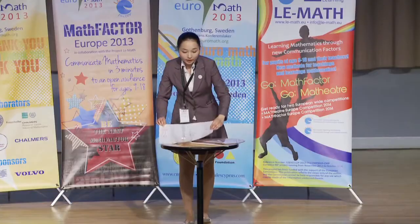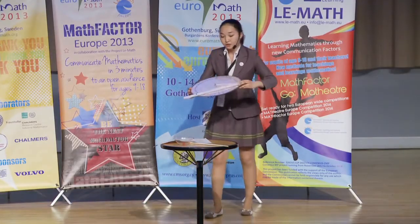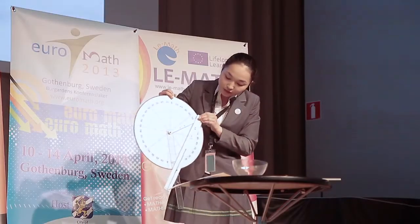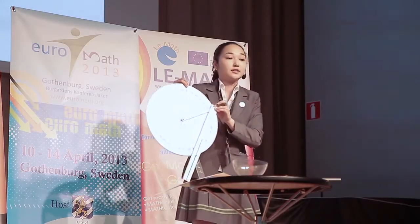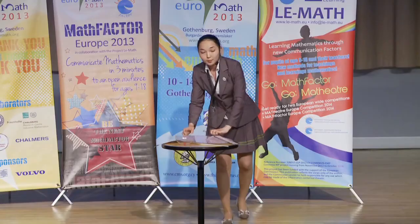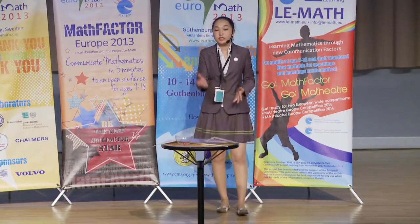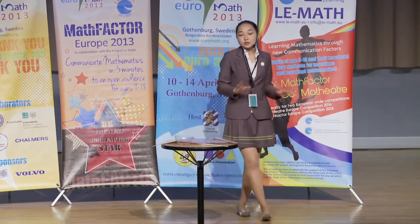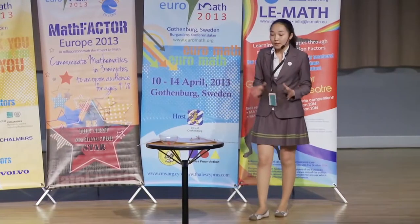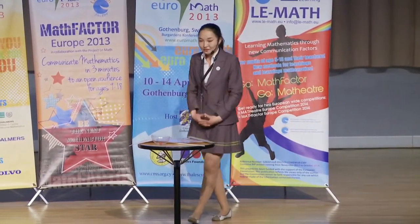It shows one-third of the given angle. For example, if I set it to 60 degrees, I can get 20 degrees respectively — it shows one-third of it. So, I proved in my practical work that we can trisect all angles with this special equipment. Thank you for your attention.